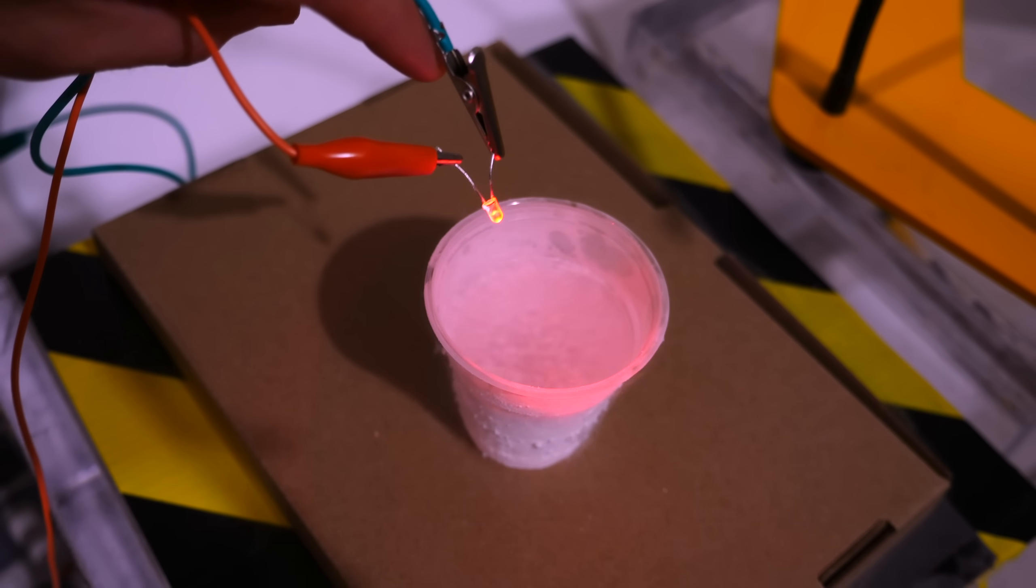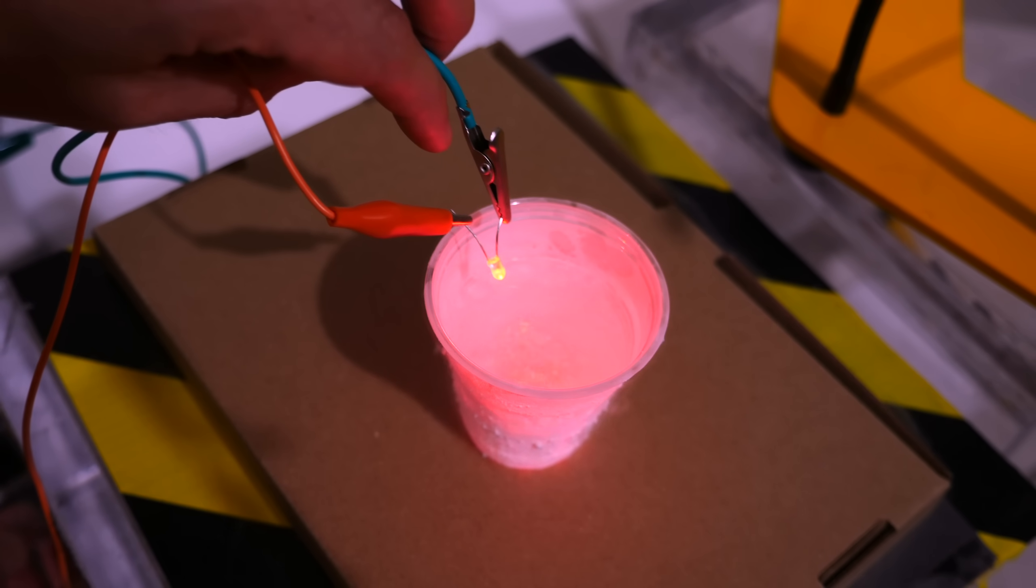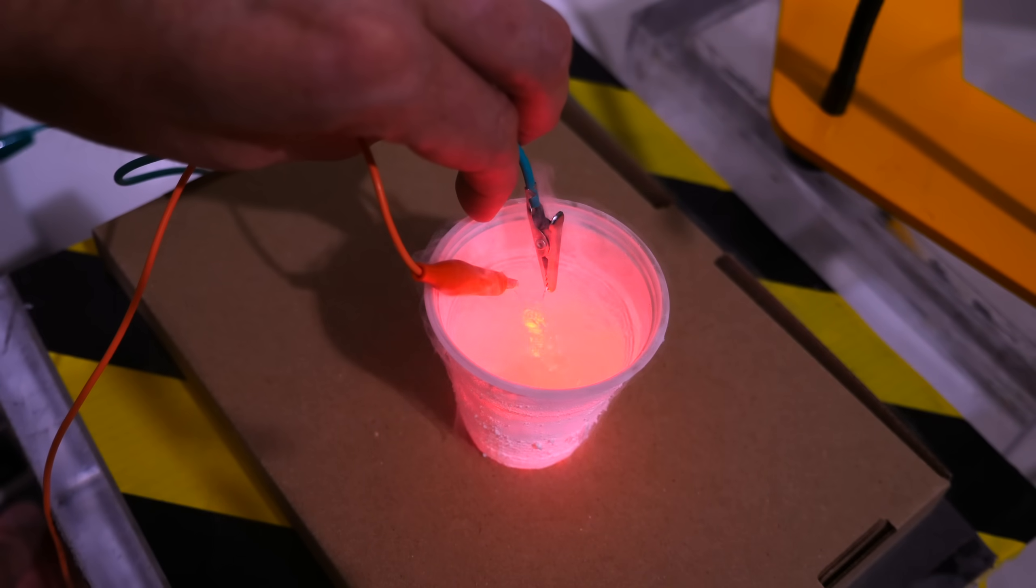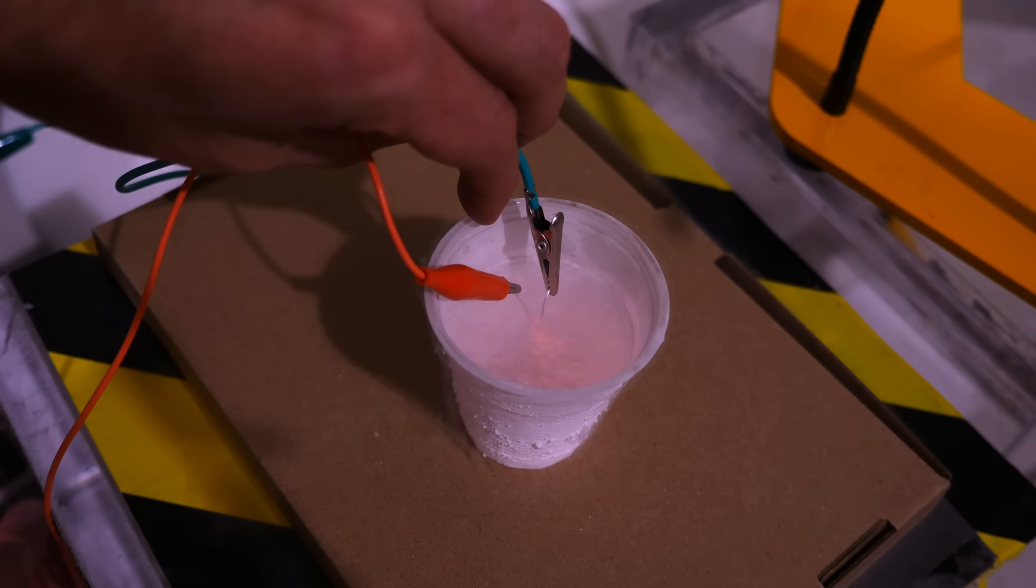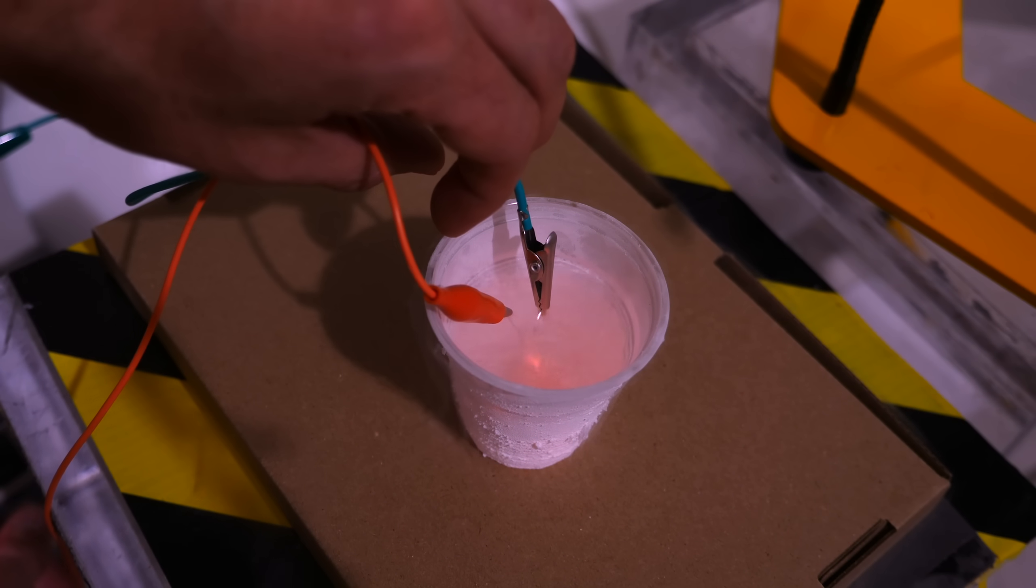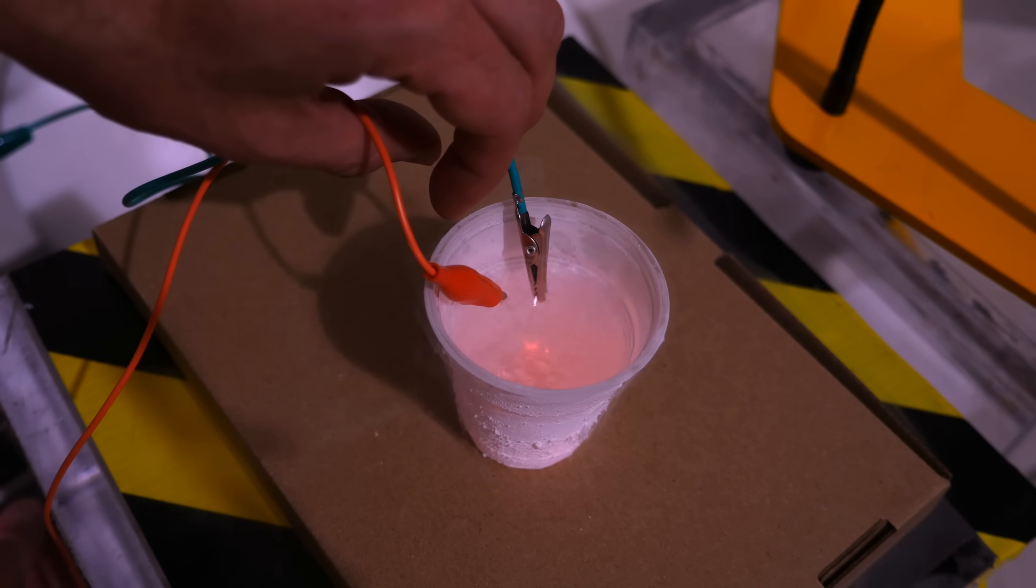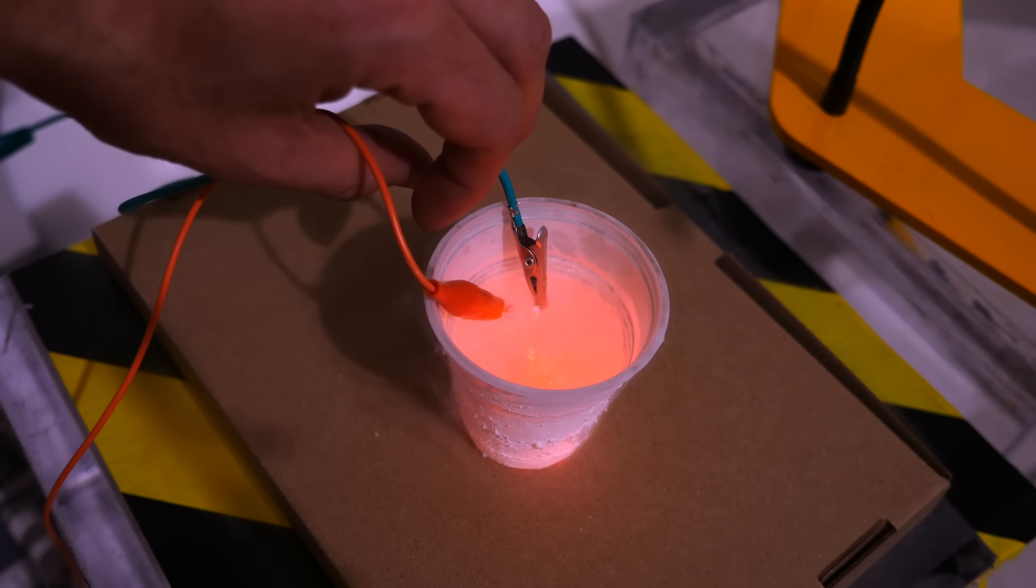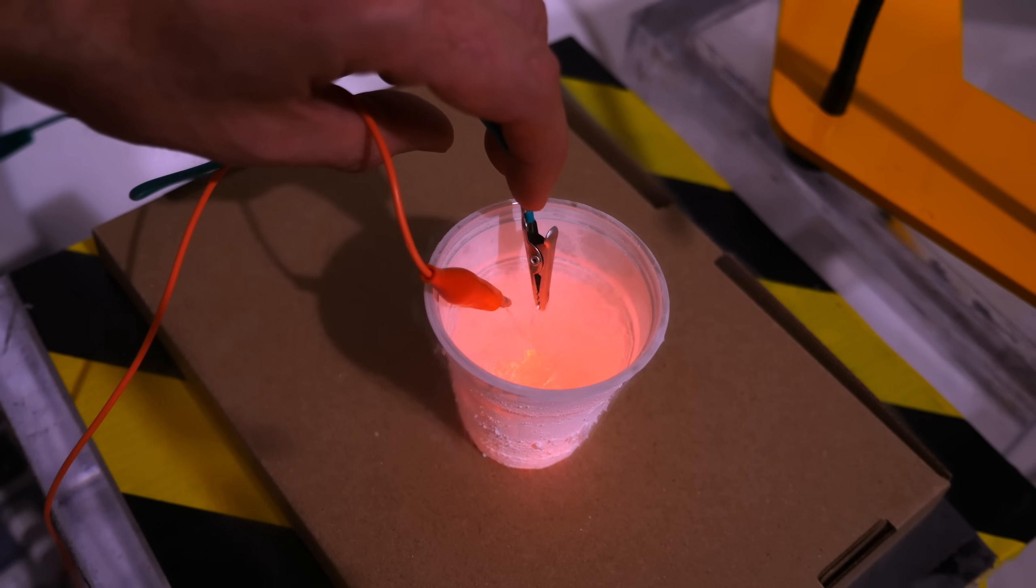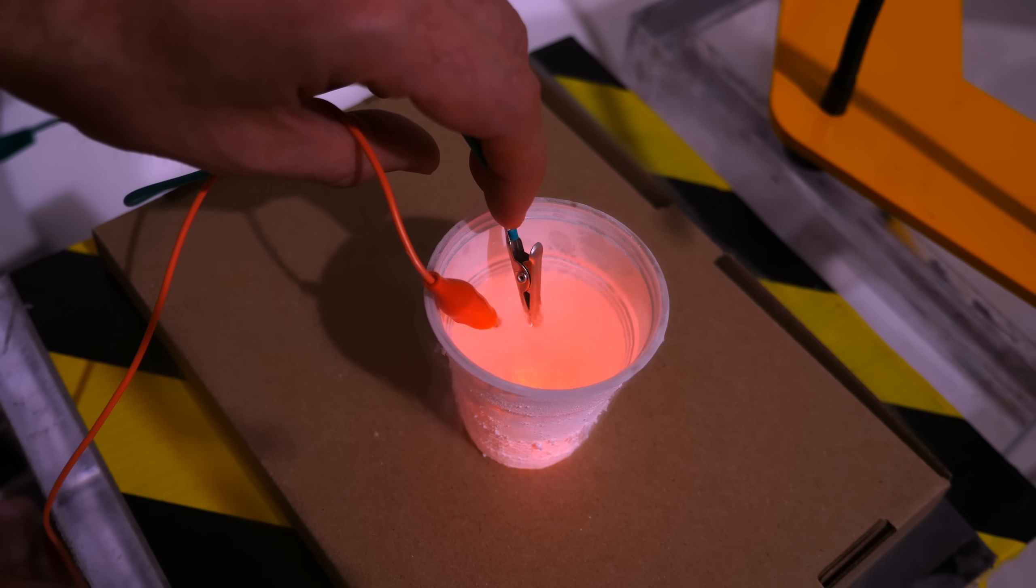Now let's try a red LED. Okay, here's a red LED in liquid nitrogen. Three, two, one. Now when I put the red LED in the liquid nitrogen it now changes to yellow or even orange.